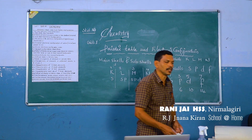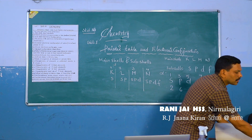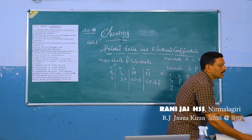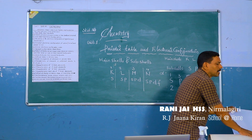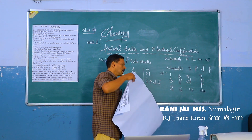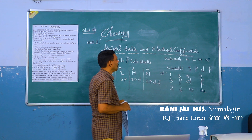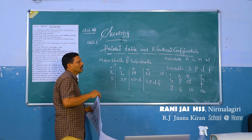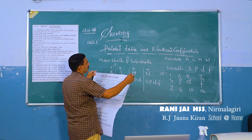Main shells are divided by sub-shells and sub-shells are divided by orbitals. The number of orbitals in sub-shells are 1, 3, 5, 7 and the number of electrons are 2, 6, 10, 14.